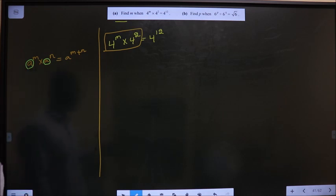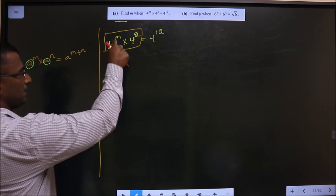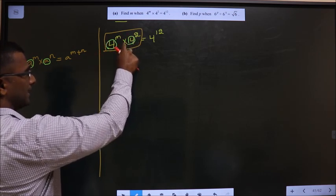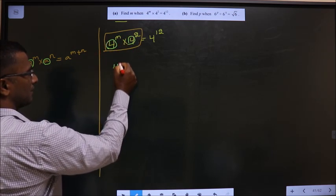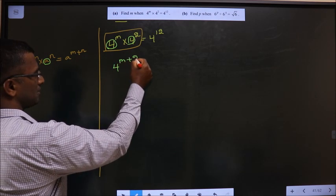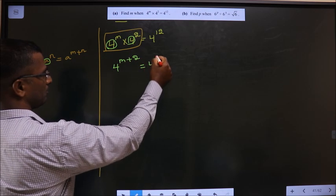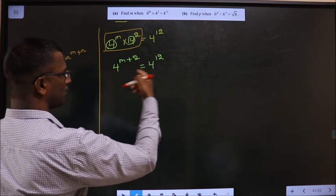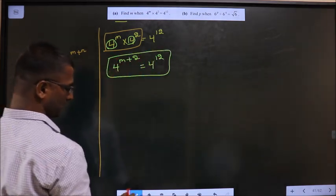The final result is to add the powers. Here also the bases are same and it's multiplication, so add the powers: 4^(m+2) = 4^12, which means m + 2 = 12.